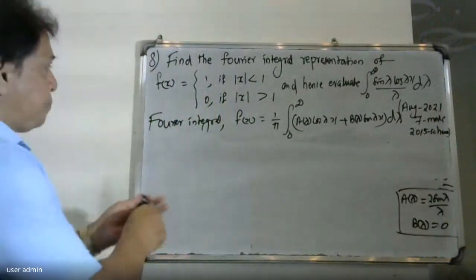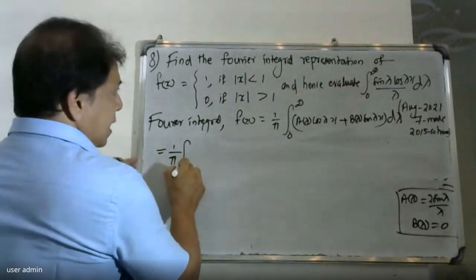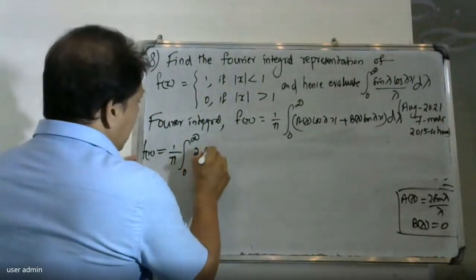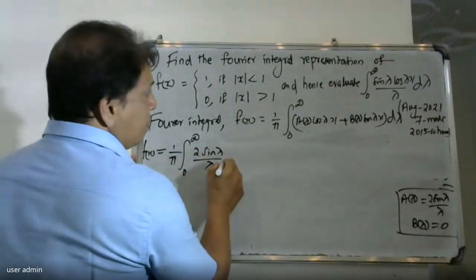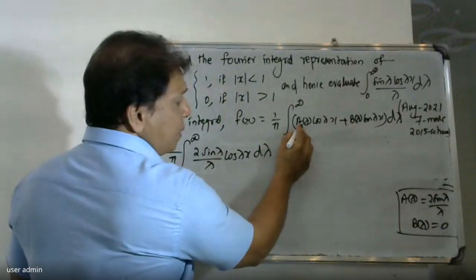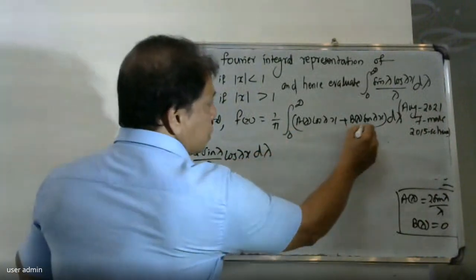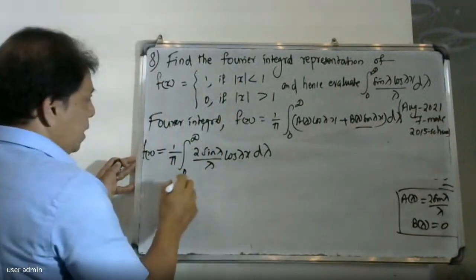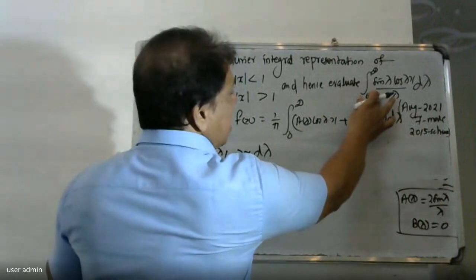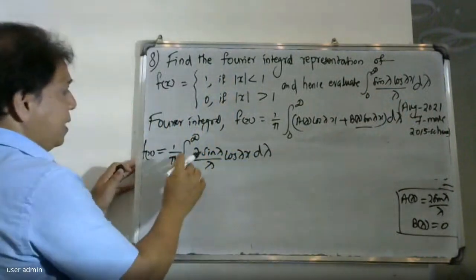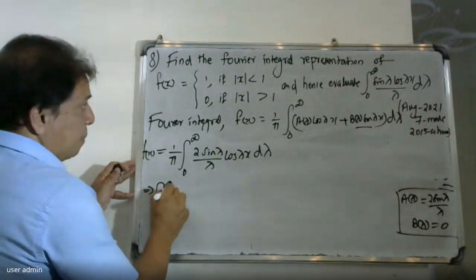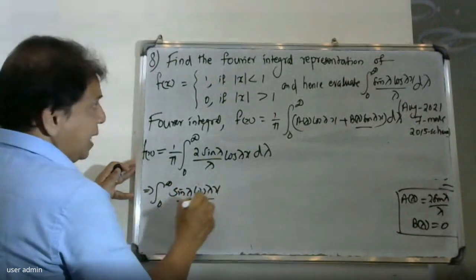We substitute these values back into the formula. f(x) equals one by pi, integral from zero to infinity of A(lambda) cos(lambda x) d lambda, which gives the integral from zero to infinity of sin(lambda) cos(lambda x) divided by lambda, d lambda.